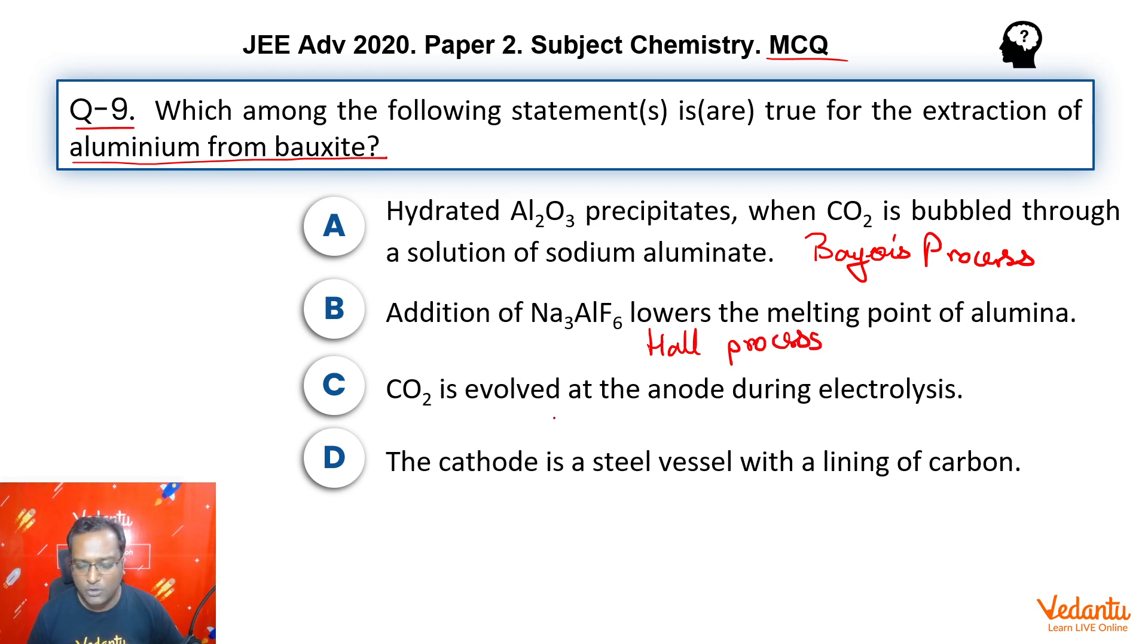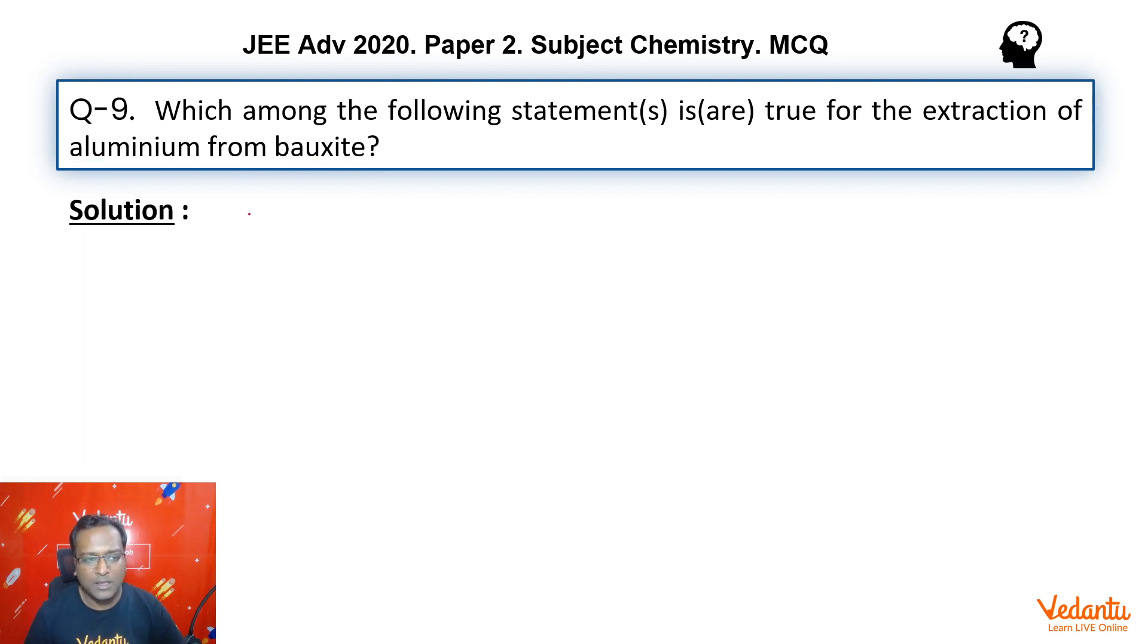Option C: CO2 is evolved at anode - the same thing, Hall's process. And last, option D: the cathode is a steel vessel with a lining of carbon - so this also is talking about Hall's process itself. So let's discuss these processes in slight detail.